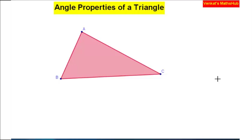In this video, I am going to talk about angle properties of a triangle. I think you know what a triangle is — a triangle means it has three sides. So here in this diagram, you can see triangle ABC.